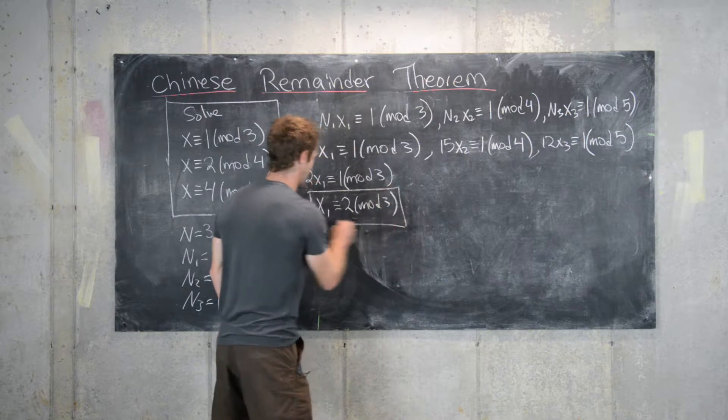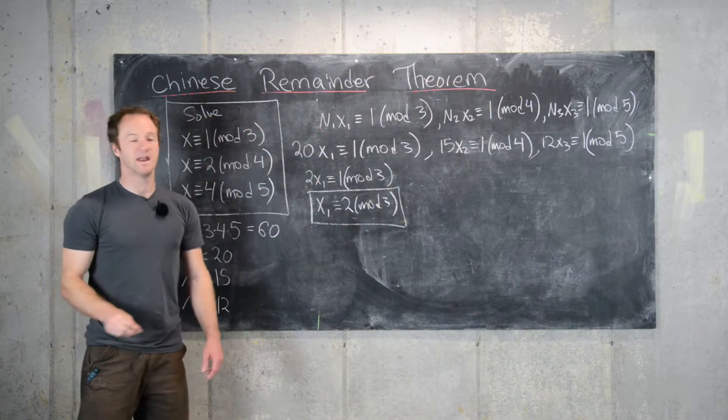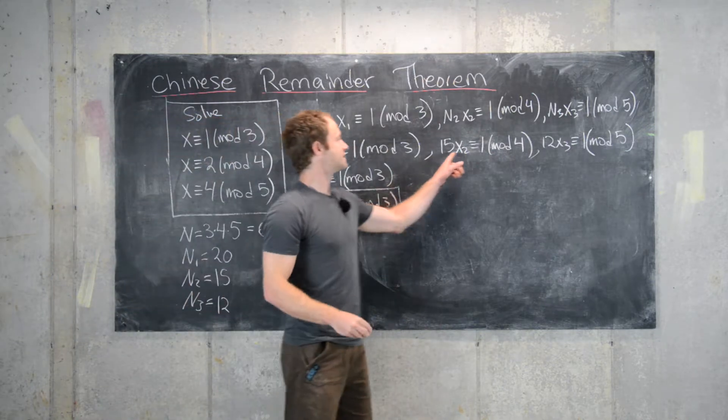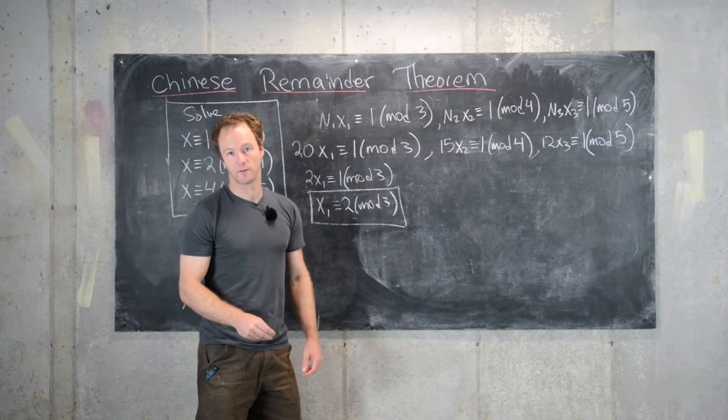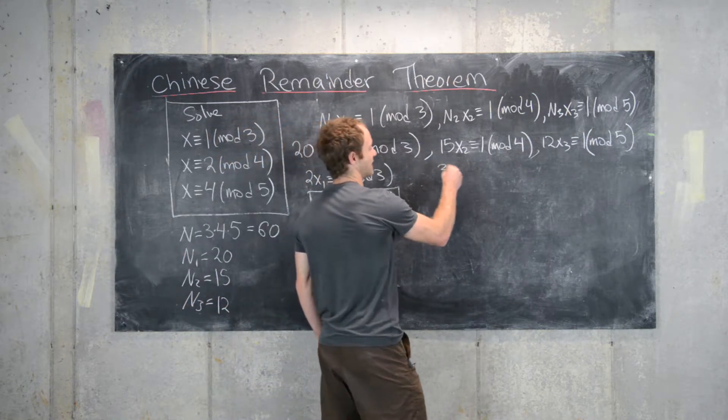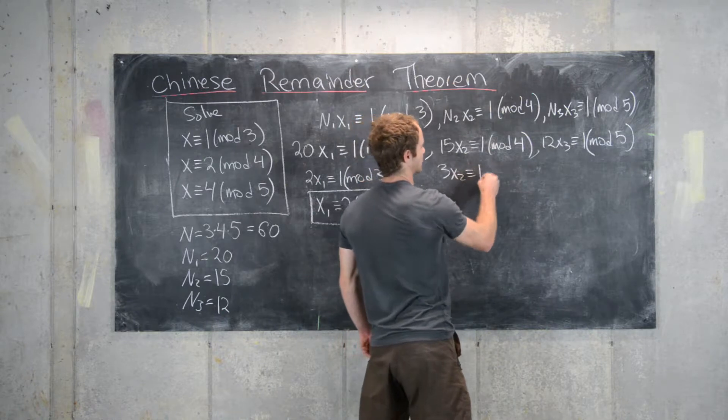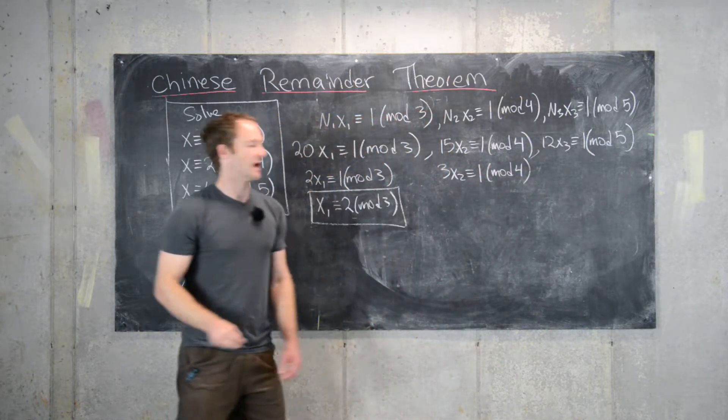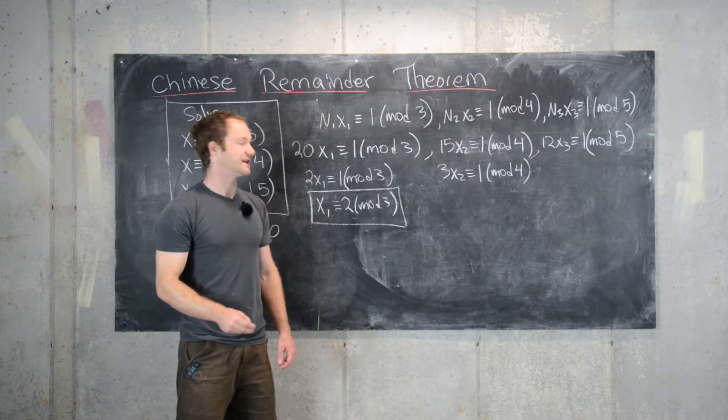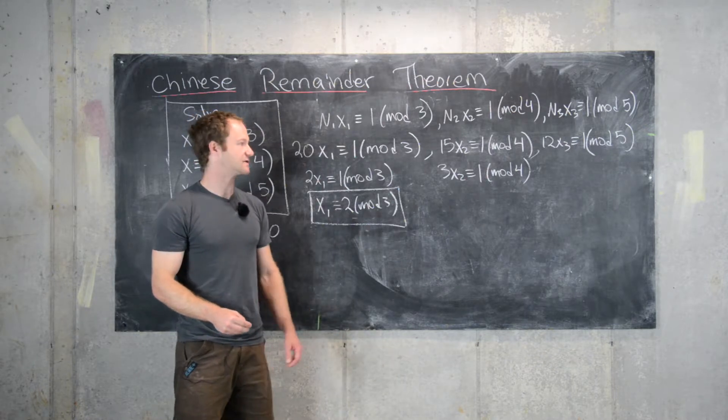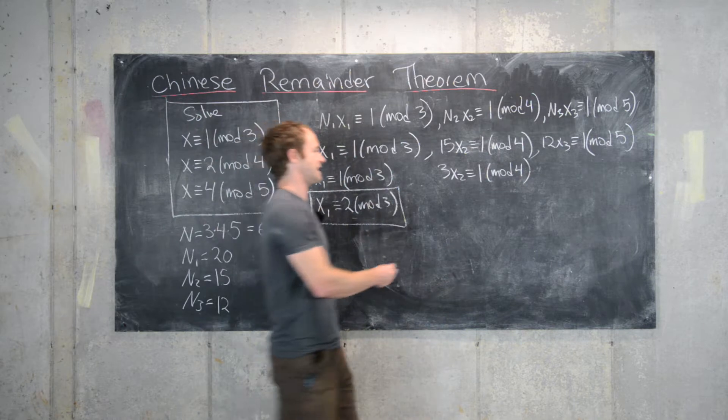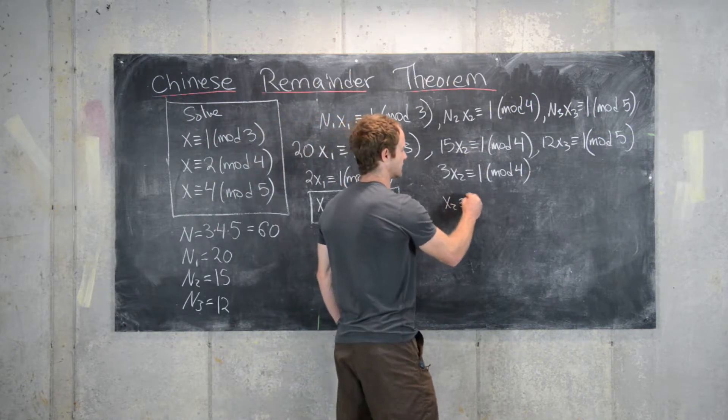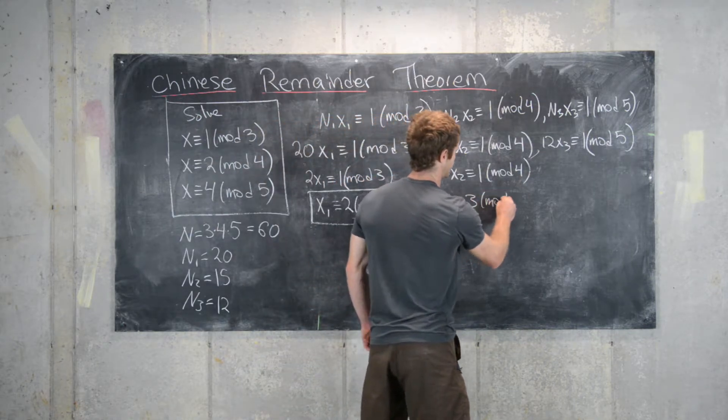Now we'll continue doing this. 15 is congruent to 3 mod 4, so we have 3x2 is congruent to 1 mod 4. Again, we notice that 3 times 3 is 9, and 9 is one more than a multiple of 4, so that tells us that x2 is congruent to 3 mod 4. So there we have our modular inverse as well.